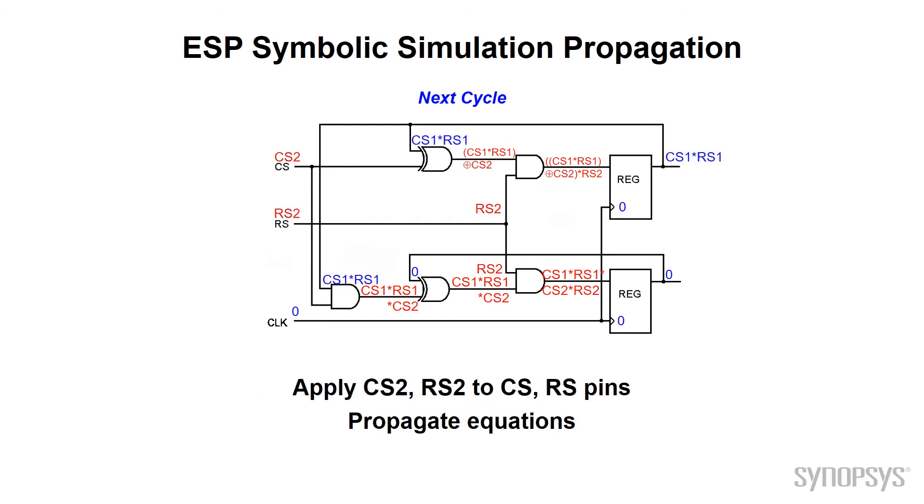Now apply new symbols CS2 and RS2 to the CS and RS pins and run. Now we can see the impact of these changes. Note how the internal nodes have symbols from both sets of inputs. We call the action of applying values to the inputs and then toggling the clock a test cycle.